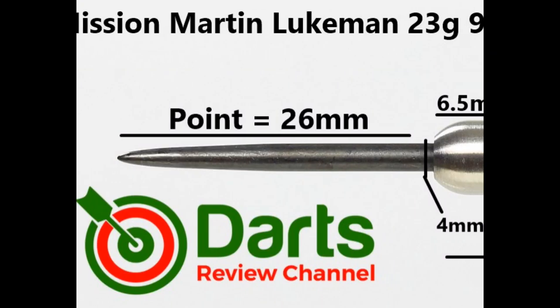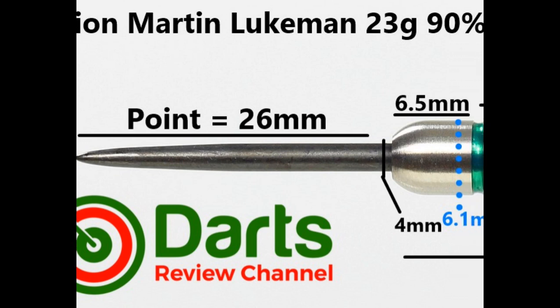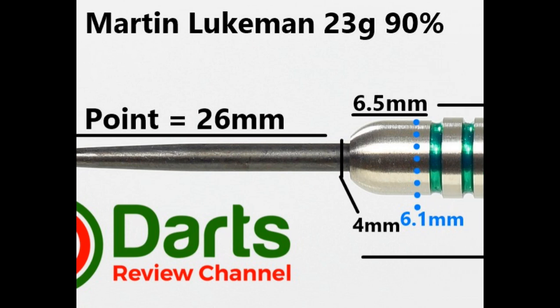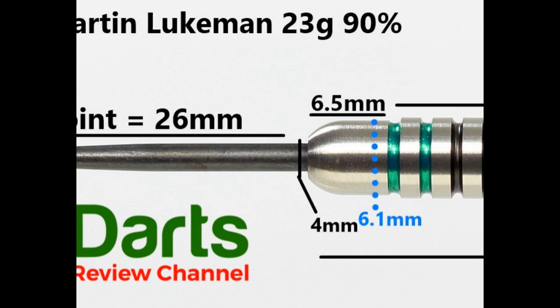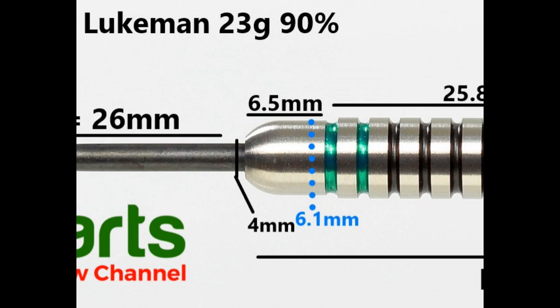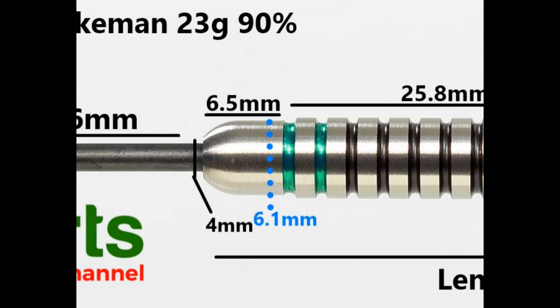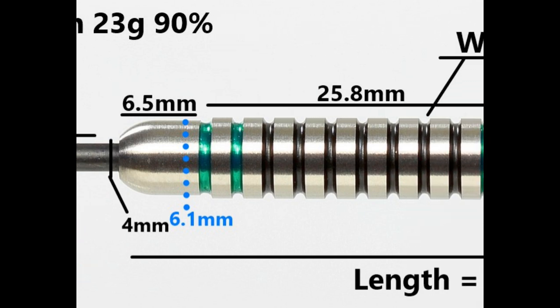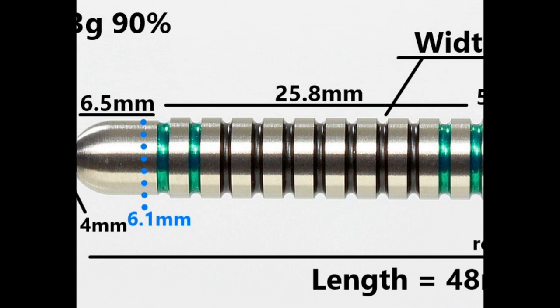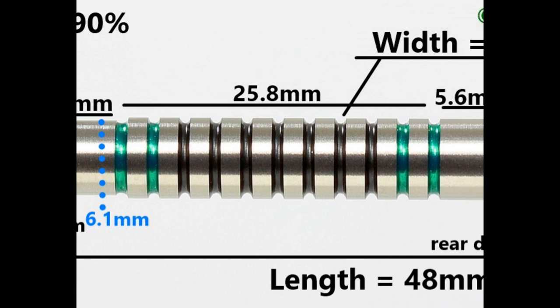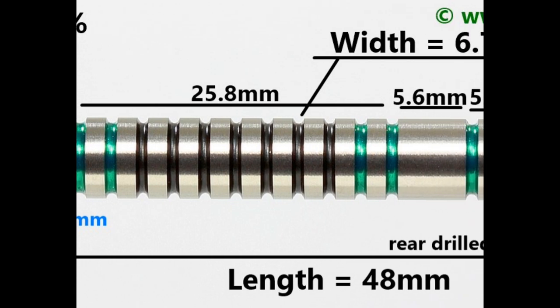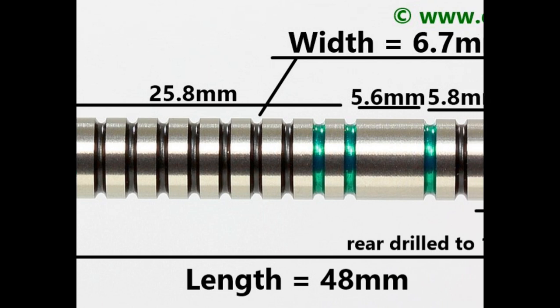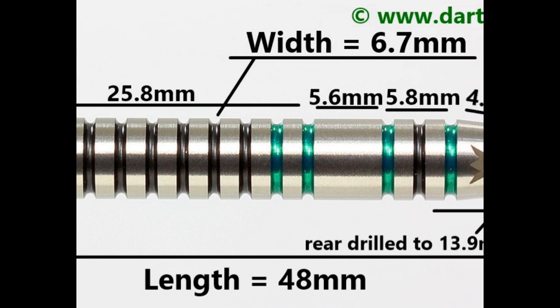That's fitted with a black coated 26 millimeter point. There's a slightly tapered bull nose. That smooth section at the front is 6.5 millimeters and it's also a little bit narrower than the ring grip section, as you can see. 6.1, and then you get onto the rings and the painted grooves in the black and green electroplated coating. That's 25.8 millimeters.